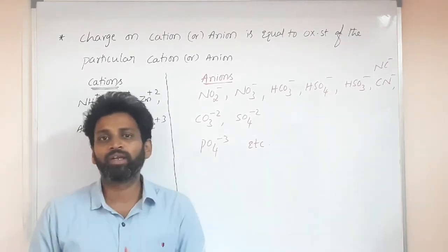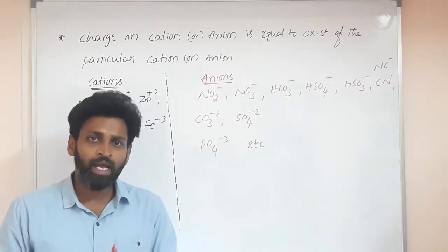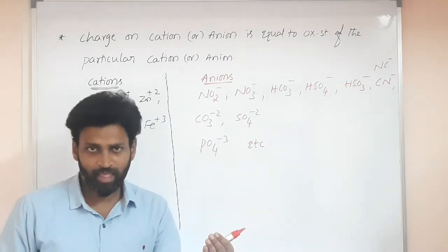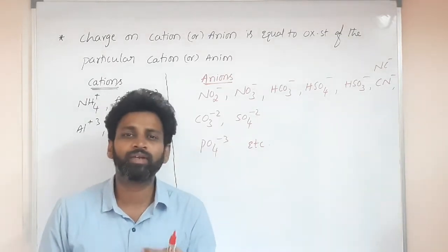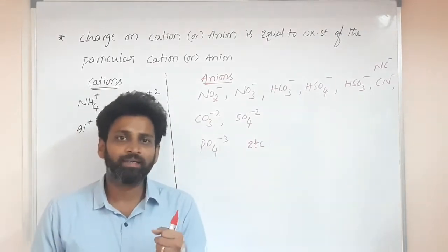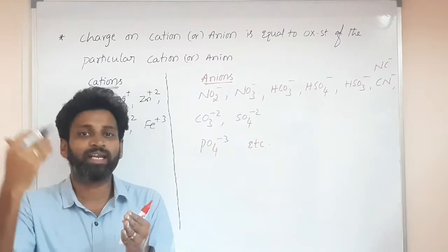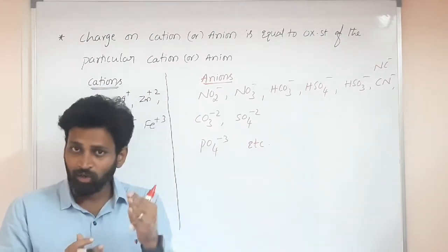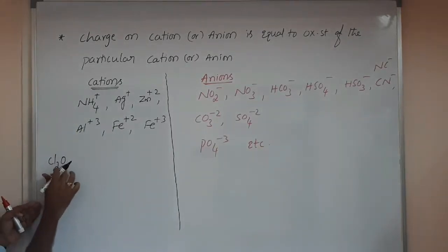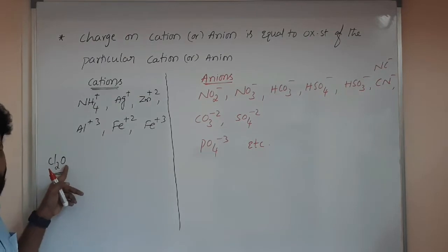One important thing: electronegativity values are very important to understand oxidation states. The element with more electronegativity will have a negative oxidation state, and the element with less electronegativity will have a positive oxidation state. For example, in HCl, chlorine is minus one because chlorine is more electronegative than hydrogen. But in Cl₂O, oxygen is more electronegative, so chlorine is positive.